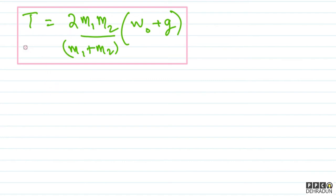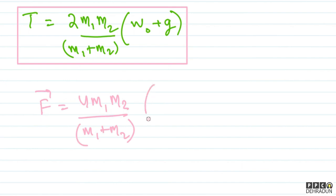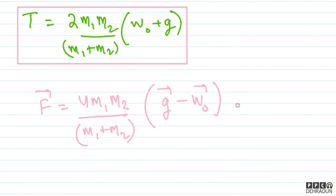But we need the force vector F = 2T acting on the ceiling. So F = 2 × T = 4·m1·m2/(m1 + m2) × (w0 + g). In vector form, since the force acts downward (in the direction of g_vector), we write: F_vector = 4·m1·m2/(m1 + m2) × (g_vector − w0_vector). I write g_vector − w0_vector because w0_vector is upward, so subtracting it means it adds to g magnitude-wise, giving downward direction.